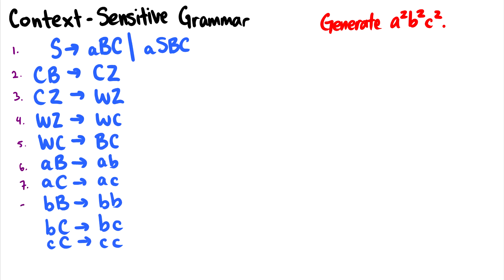There's now context involved. For instance, in rule two, we have non-terminal CB goes to non-terminals CZ. In other words, we're saying that this B to Z transition cannot occur anywhere. It can only occur when it comes after a non-terminal C. With this, we can now do languages such as A to the N, B to the N, C to the N, which we saw was not possible in context-free languages using the pumping lemma.